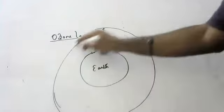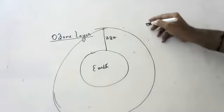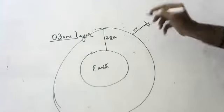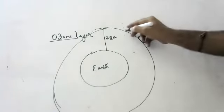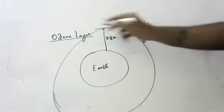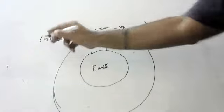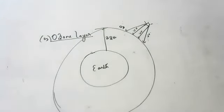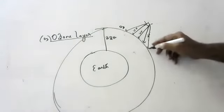This ozone is protecting our Earth from harmful UV rays. The ozone layer will not allow UV rays to reach the Earth. What is the formula of ozone? O3, right? O3. It protects our Earth from UV rays.